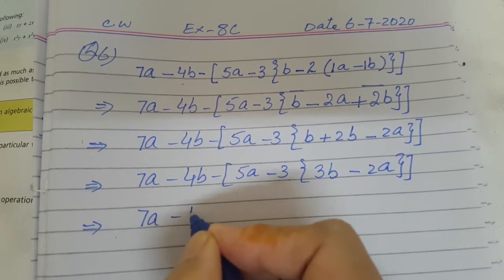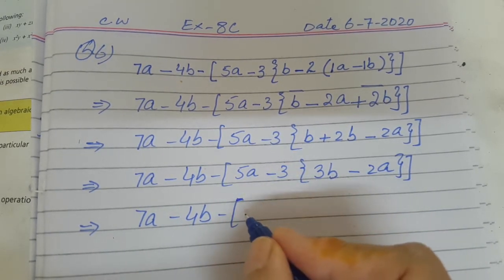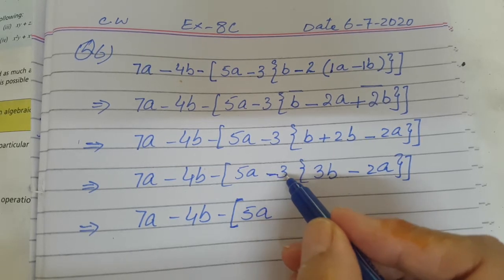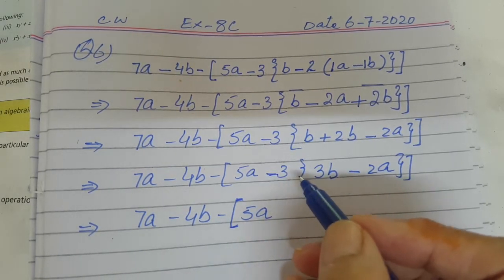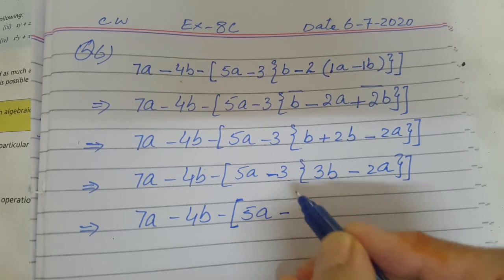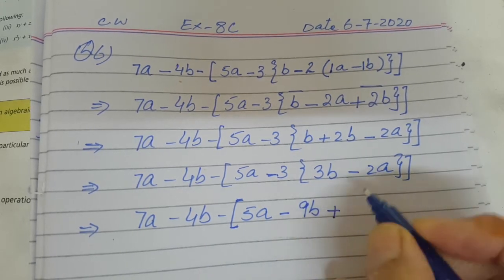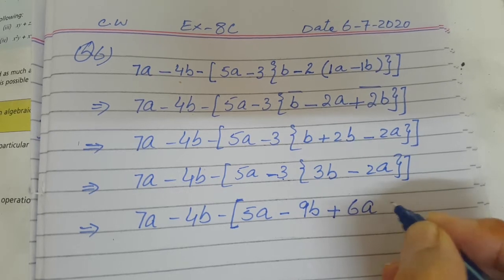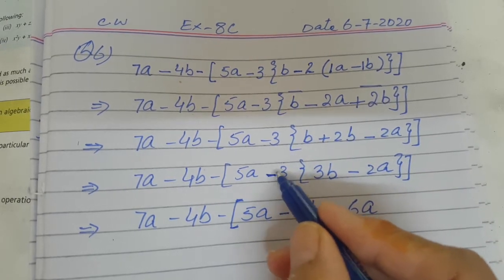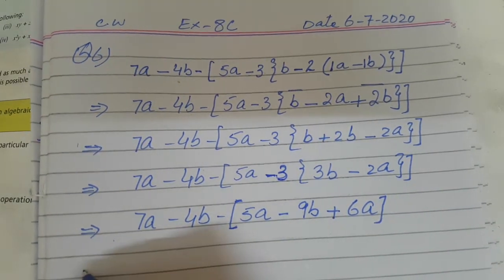Now 7a minus 4b, then minus 5a — the outer sign and number for the braces is minus 3. You multiply 3 with each term inside and sign with sign. Minus times plus gives minus 3 times 3b is 9b; minus times minus is plus, so 3 times 2a is 6a. You finish the braces and get minus 9b and plus 6a.